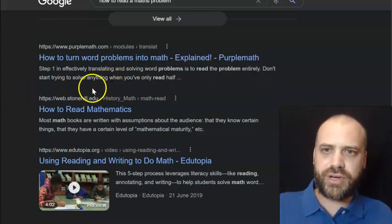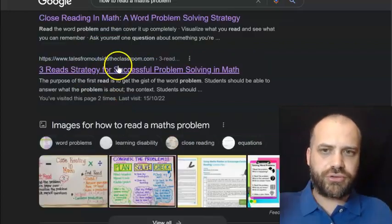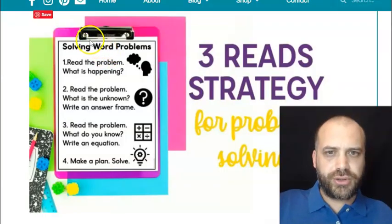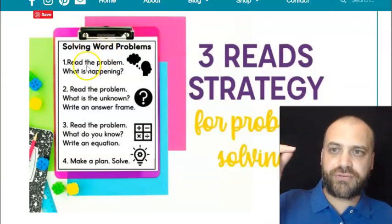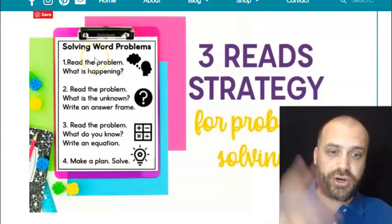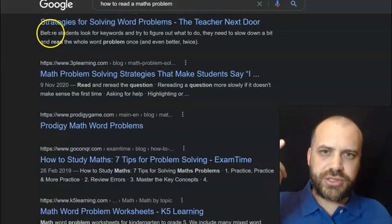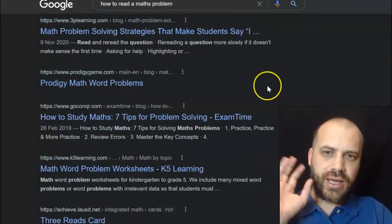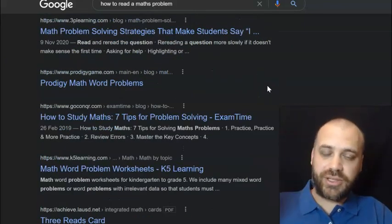When I google how to read a maths problem, on the first page we can see step one in effectively translating and solving word problems is to read the problem entirely. Don't start trying to solve anything when you've only read half. Scroll further and you'll find three reads strategy which is famous. When you click into there you learn that the three read strategy advocates for reading the question three times. I'm on the second page of results now and I need to slow down a bit and read the whole word problem once and even better twice. Every result I see says something like this.